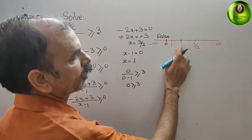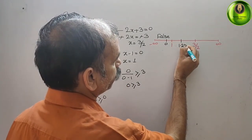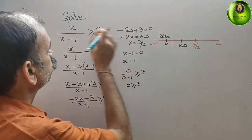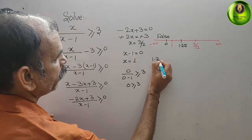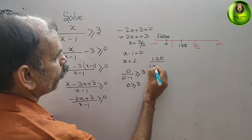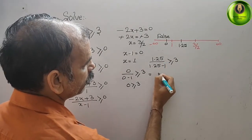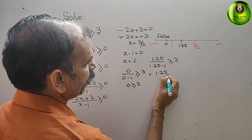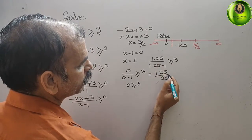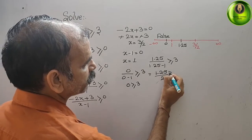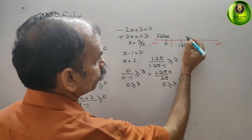For the middle sector (1 < x < 1.5), we take x = 1.25. Substituting: 1.25/(1.25 - 1) = 1.25/0.25 = 5. Since 5 ≥ 3, this is true. So we mark this sector as true.